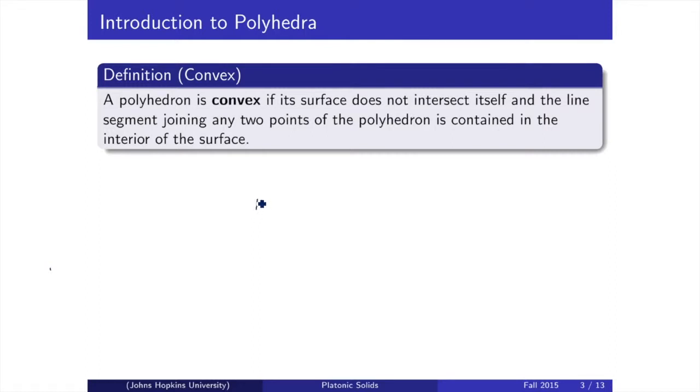A convex set is a set of points where if you draw between any two points in that set, that entire line segment will still be within that set. A non-convex set, or a concave set, is a set where this does not always happen. Take Pac-Man, for example.